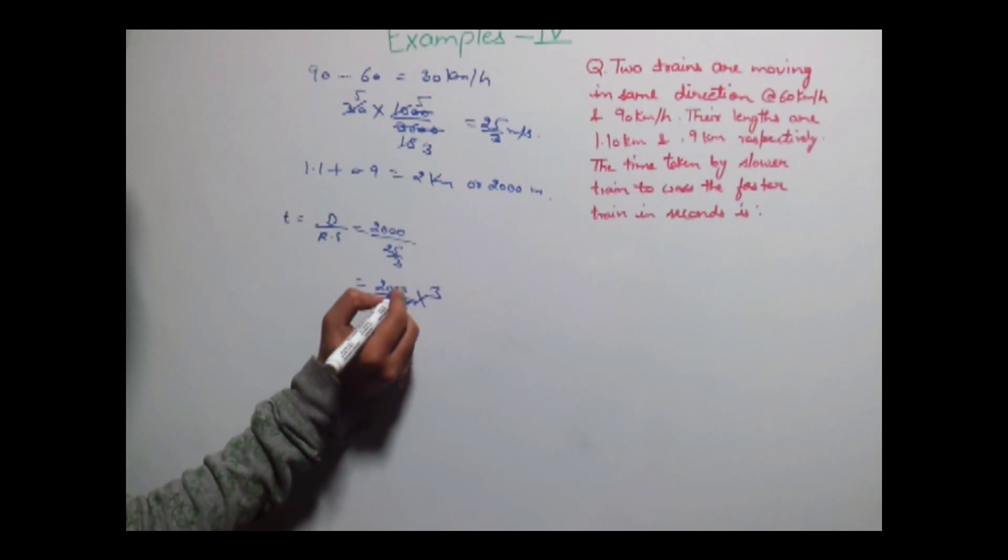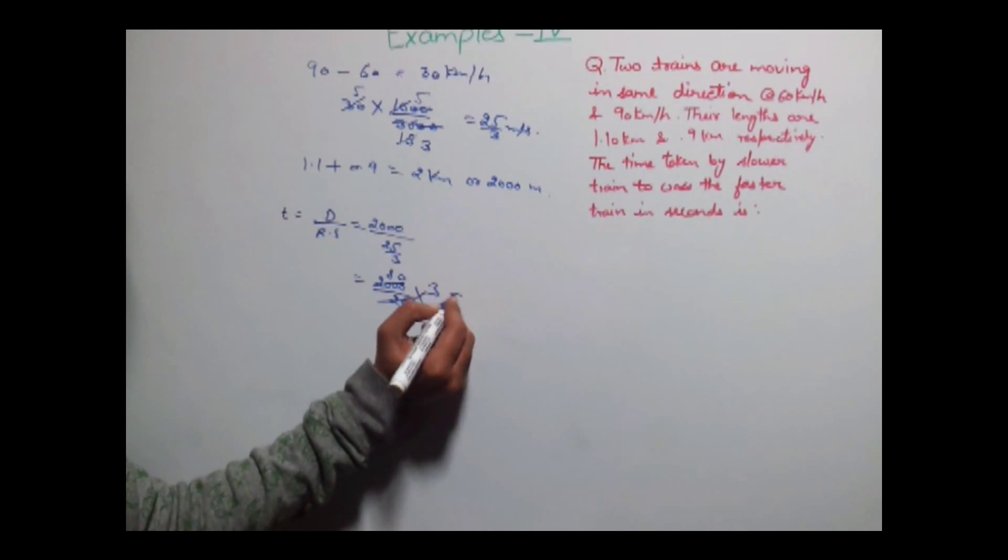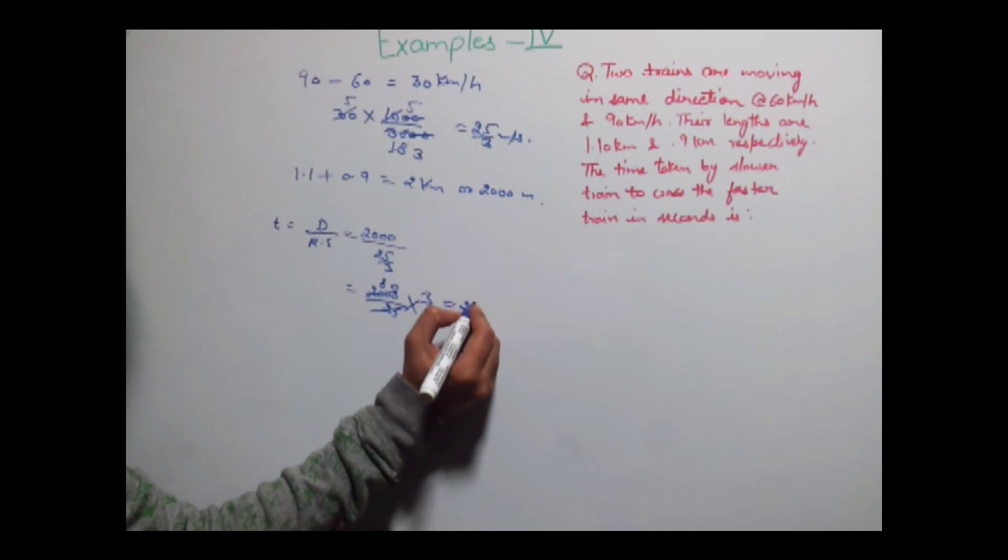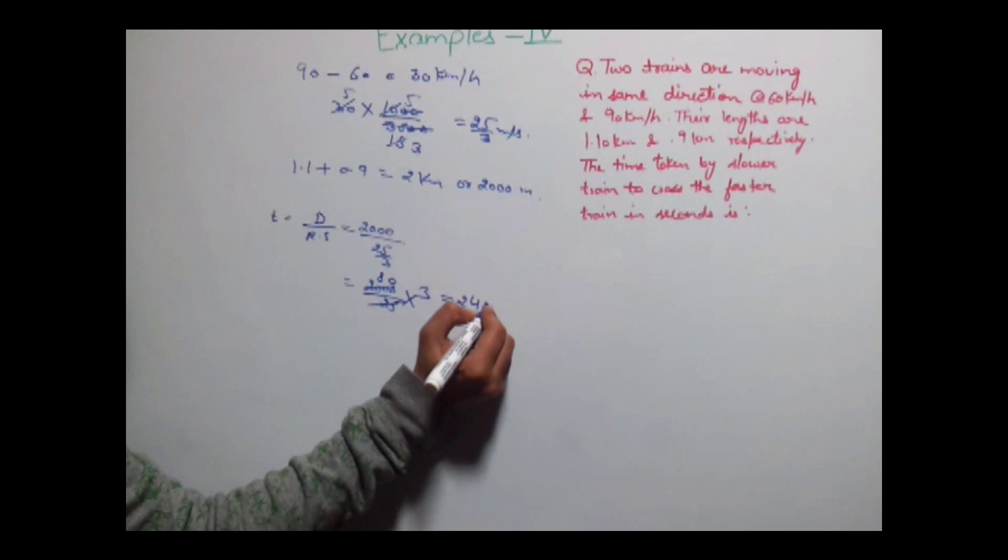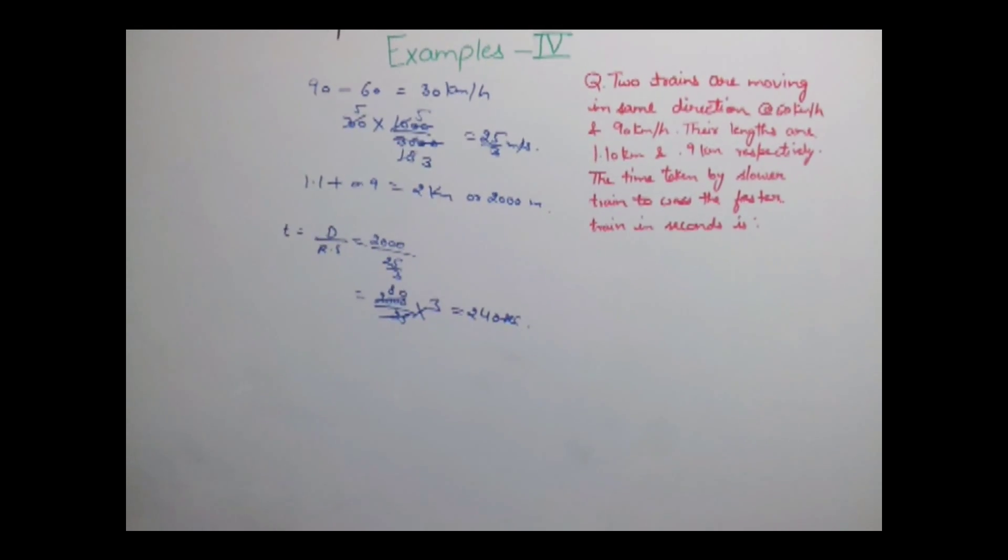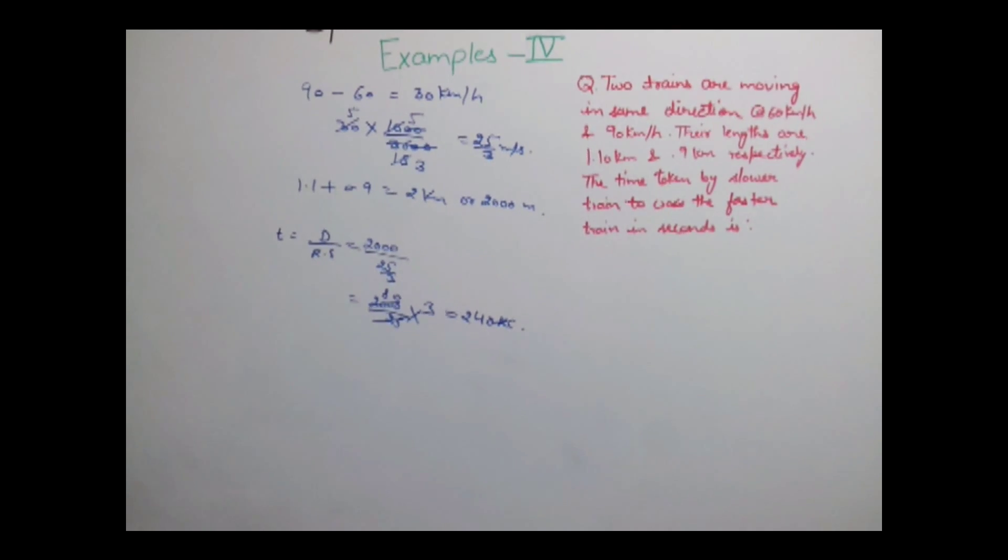25 into 80 and 8 into 3 is 240 seconds. So time taken by the slower train to cross the faster train is 240 seconds.